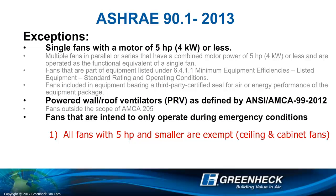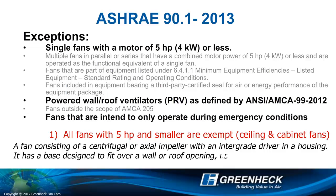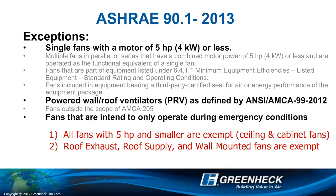Second, all powered wall and roof ventilators, also known as PRVs. The AMCA definition of power roof ventilators is a fan consisting of a centrifugal or axial impeller with an integral driver in a housing. It has a base designed to fit over a wall or roof opening, usually by means of a curb. This means all of GreenHEC's roof exhaust, roof supply, and wall mounted fans are exempt.